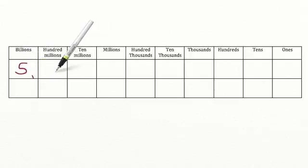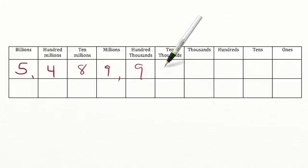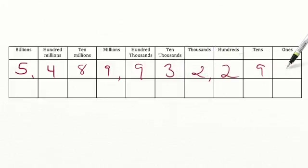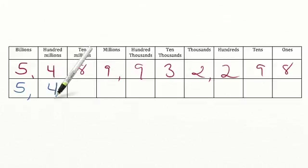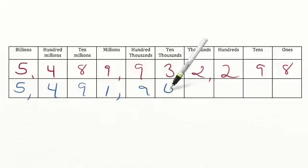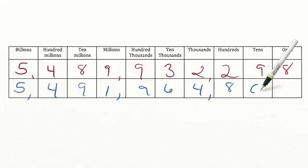Let's go ahead and go through a practice problem together, this time working in the billions place. Let's say that we have the number 5,489,932,298, and we need to compare this number to 5,491,964,801.